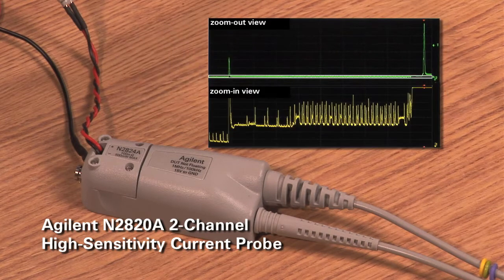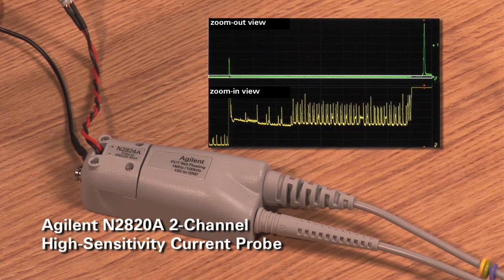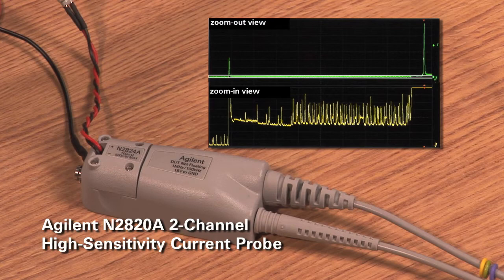And the high gain amplifier provides a zoom in view for observing extremely small current fluctuations, such as a mobile phone's idle state current.